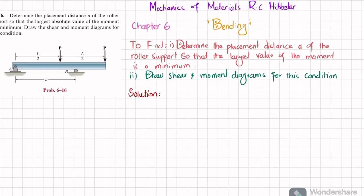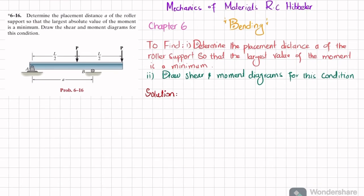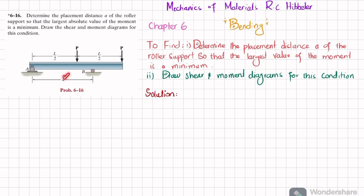This is an overhanging beam. There is a roller support at point B and a pin support at point A, and two concentrated loads: one at a length of L/2 and one at a length of L from point A. The condition is to find the placement A of roller support B such that the largest absolute value of moment is minimum.